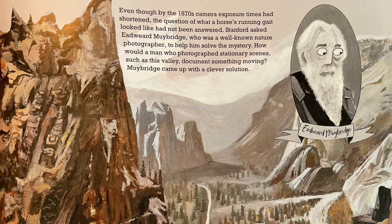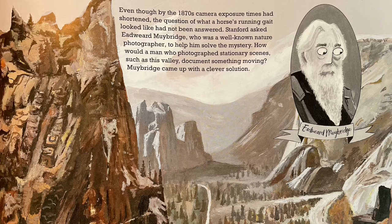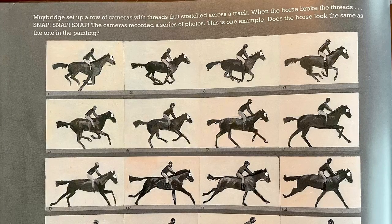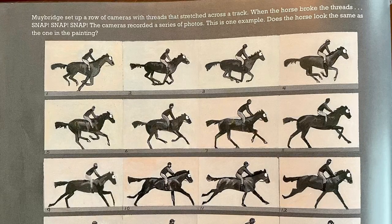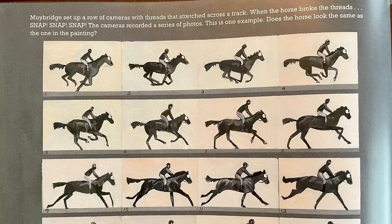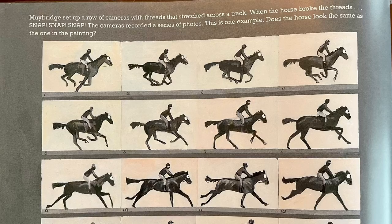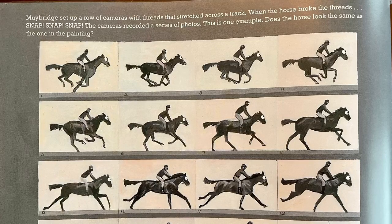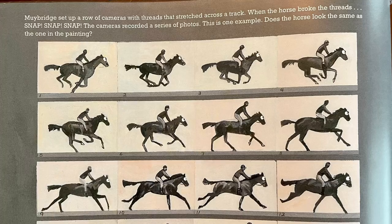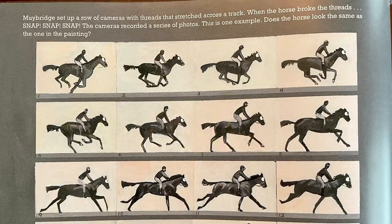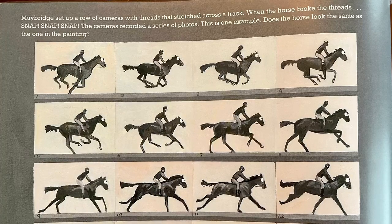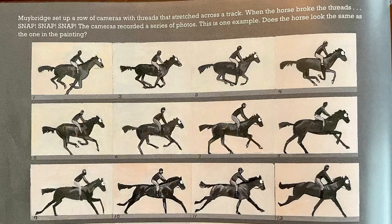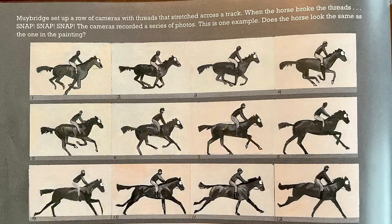Muybridge came up with a clever solution. He set up a row of cameras with threads that stretched across a track. When the horse broke the threads — snap, snap, snap — the cameras recorded a series of photos. Does the horse look the same as the one in the painting? This is The Horse in Motion, 1878.